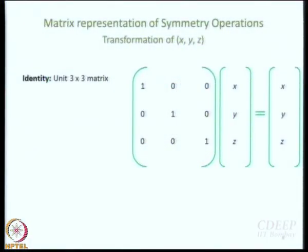Let us say I am talking about a transformation of a point with coordinates x, y, z. The identity matrix is very easy to work out — it is the 3 by 3 unit matrix — because if you perform the identity operation, what happens to x, y, z is that x remains x, y remains y, z remains z: no change. So the transformation matrix is going to be 1 0 0, 0 1 0, 0 0 1.